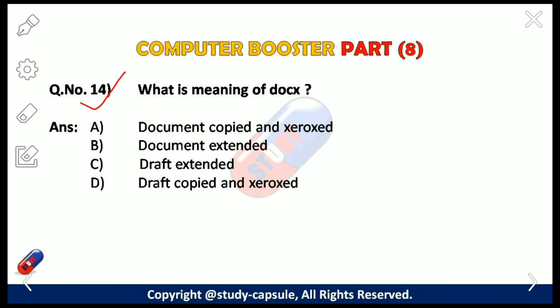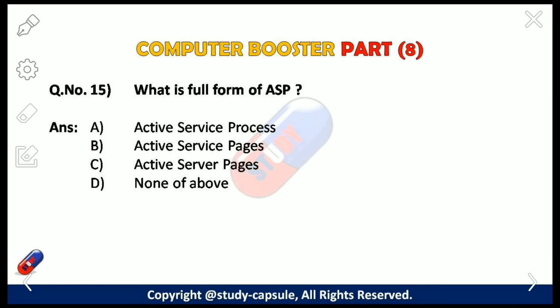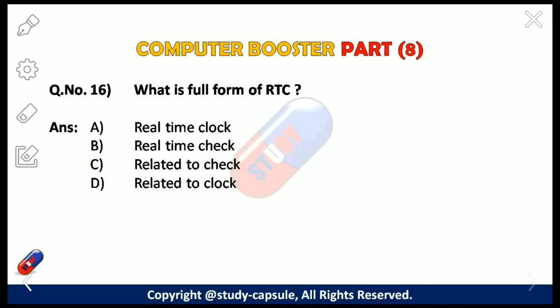Our next question: what is the full form of ASP? The options are: A — Active Service Process, B — Active Service Pages, C — Active Server Pages, D — None of the above. The answer is C — Active Server Pages.